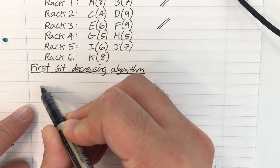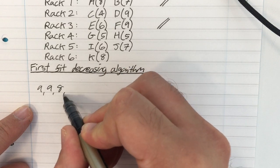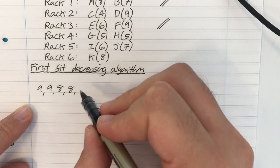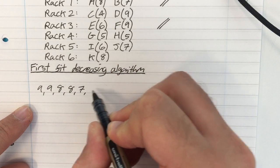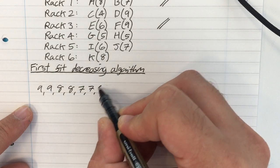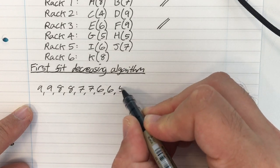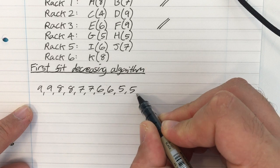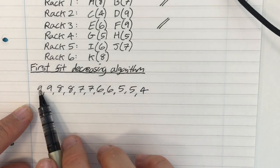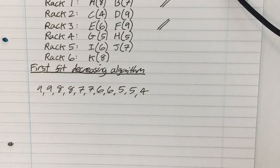So we're going to have D, which is 9. F, which is 9. A, which is 8. K, which is 8. B, which is 7. J, which is 7. E, which is 6. I, which is 6. G is 5. H is 5. And C is 4. All 11 boxes are now sorted.